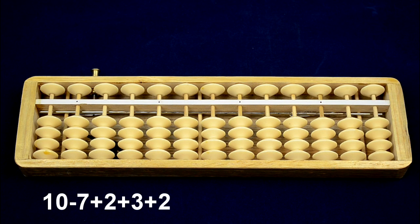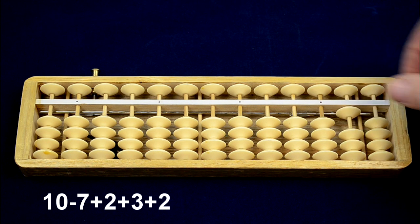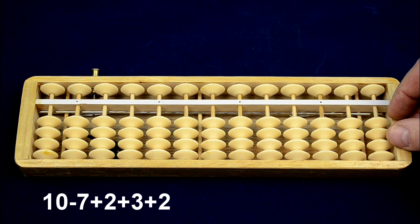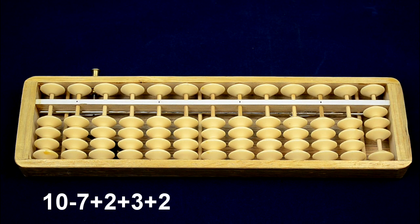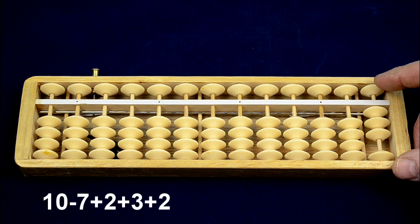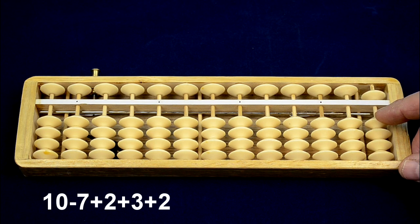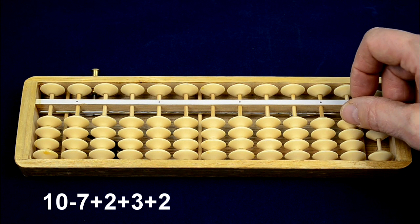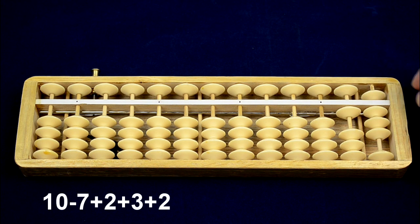This is 10 minus 7 plus 2 plus 3 plus 2. 10 minus 7, think complementary, plus 3. Then I say plus 2, put in a 5 and take away 3. Plus 3, plus 2, think complementary, put in 10 and take away 8.